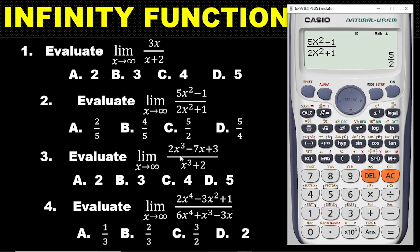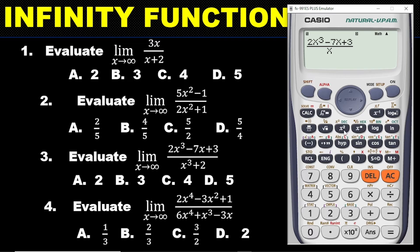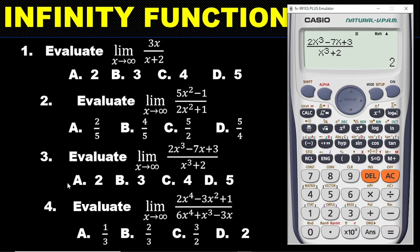Now we go to question three. Enter this expression on the calculator: hit the fraction button, then 2x³ — so alpha x, raise to power 3 — then minus 7x, so minus 7 then alpha x, plus 3. Go down and enter x³ — alpha x to the power 3 — plus 2. Click calc, enter 9 twelve times for infinity, press equal, and the answer is 2. The correct answer for question 3 is option E.